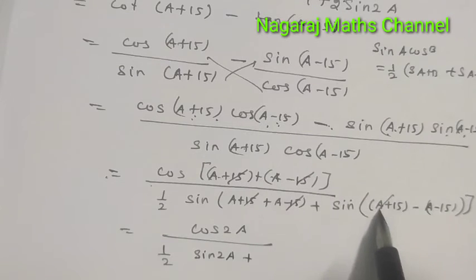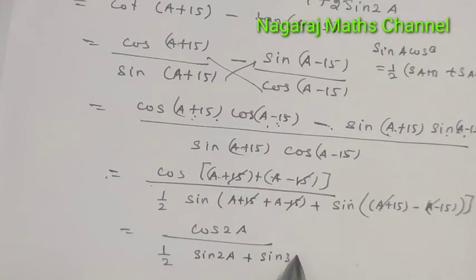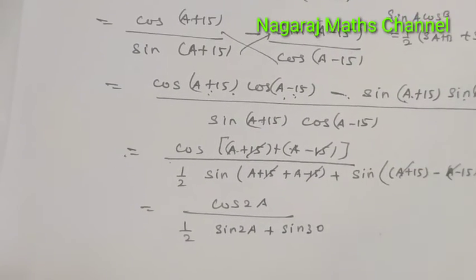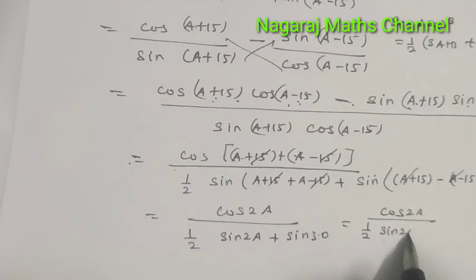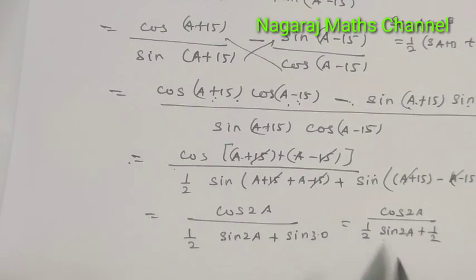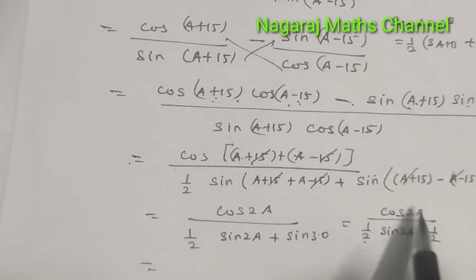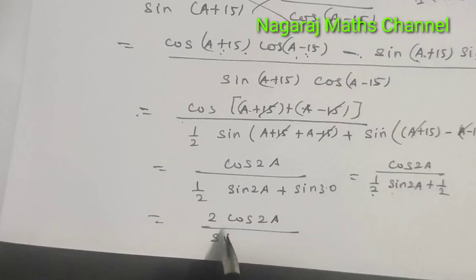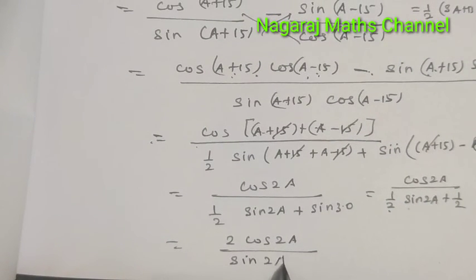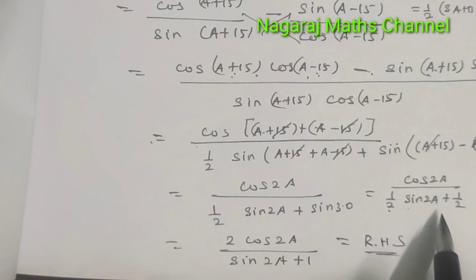Since sin(30°) equals 1/2, we get cos(2A) divided by 1/2[sin(2A) + 1]. The 1/2 factors cancel, giving us 2cos(2A) divided by sin(2A) + 1.